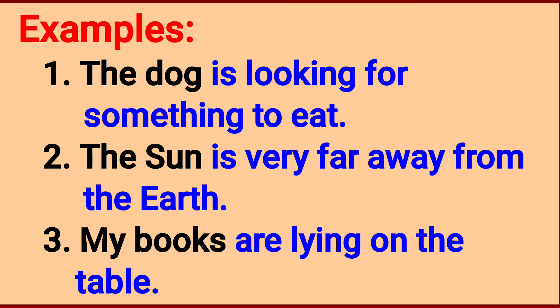'My books are lying on the table.' 'My books' is the subject, and 'are lying on the table' is the predicate. So, the dog, the sun, my books — these are all nouns. Already we have read about these. These are all nouns, and at the same time, they serve as the subject.